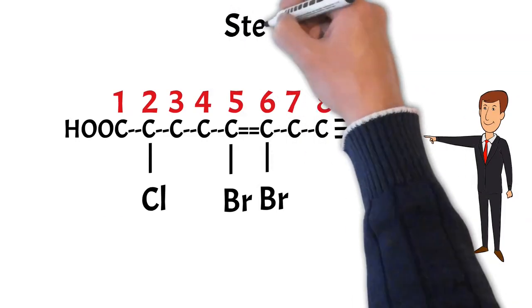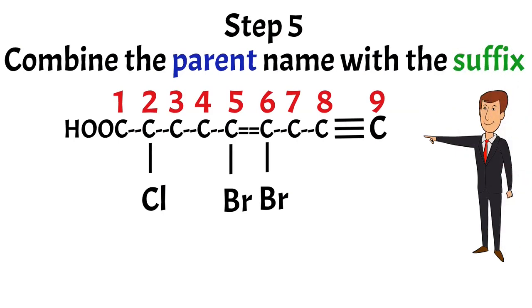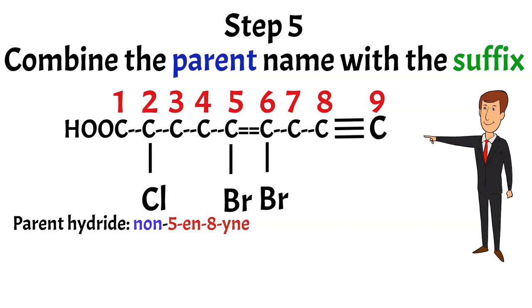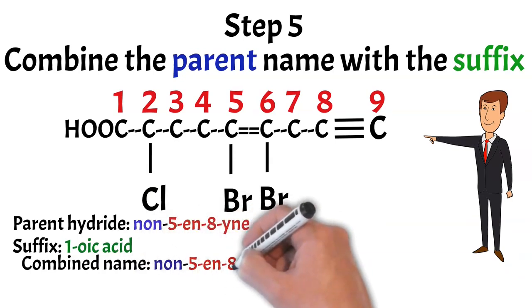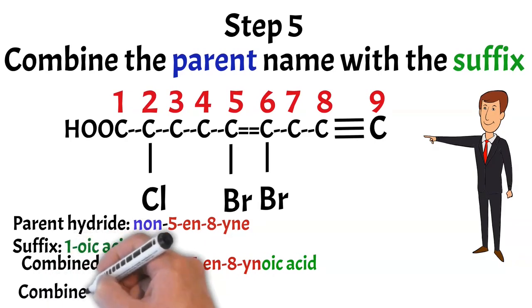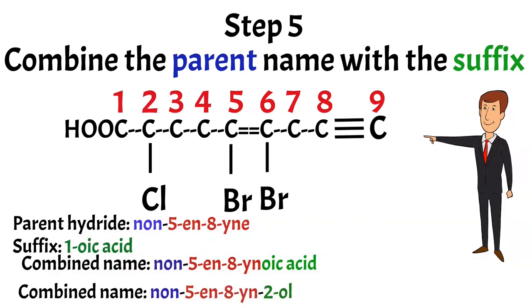Step number 5: combine the parent name with the secondary suffix. In this example, the parent hydride is non-5-en-8-yne. The secondary suffix is '-oic acid'. So the combined name will be 'non-5-en-8-yn-oic acid'. If instead of COOH we had a simple OH group at carbon number 2, then the name would be 'non-5-en-8-yn-2-ol'.